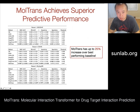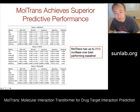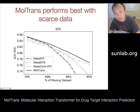The performance of MOTRANS compared to all baselines across three datasets shows that in terms of ROC AUC, PR AUC, sensitivity, and specificity, MOTRANS achieves up to 25% improvement over the best-performing baseline on average. When there is a lot of missing data, the relative improvement of MOTRANS against the most competitive state-of-the-art method is even greater.